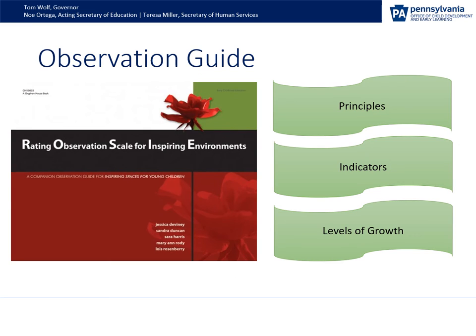Thank you so much to Dr. Duncan for that wonderful insight. Now let's dive into the Observation Guide. The guide is broken down into seven principles. Each of these principles will help you make your classroom bloom. Each principle has 3 to 13 indicators, and within each indicator are three levels of growth. Each level builds off the previous. Think about the seven principles as items like health and safety, room arrangement, and dramatic play. The indicators are specific expectations like sanitizing before and after meals and having centers accessible. The ROSE levels of growth are like the ratings in ERS from 1 to 7, where 1 is the inadequate level and 7 is excellent.